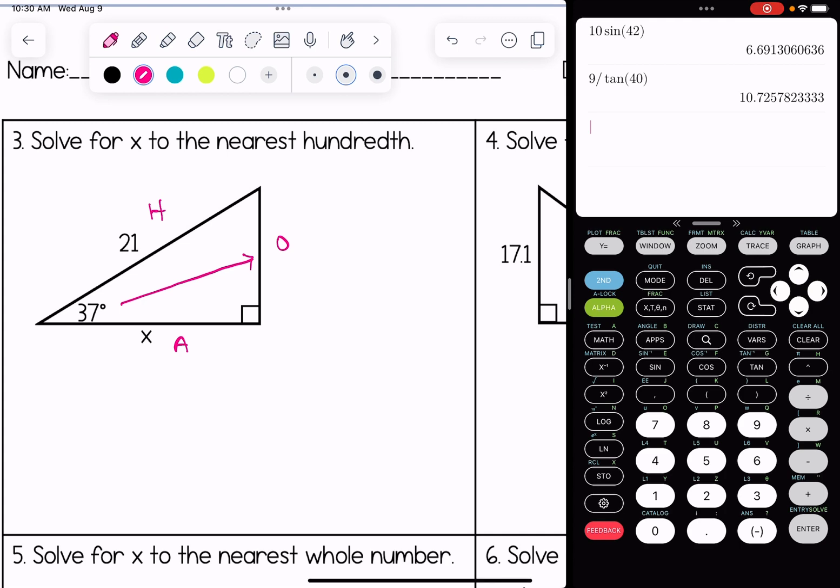Based upon that, I'm going to pick cosine in this case, because I have A and H. So cosine of 37 is equal to x over 21, adjacent over hypotenuse.